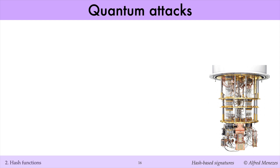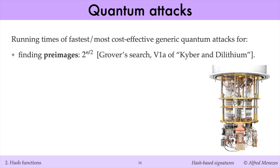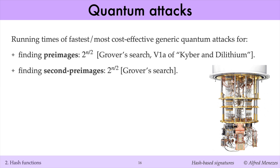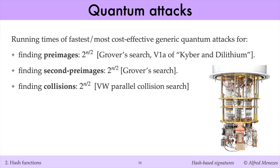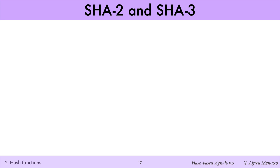The security landscape changes when considering quantum attacks. The most efficient generic quantum attacks for finding preimages takes 2^(n/2) operations, for finding second preimages also takes 2^(n/2) operations, and for finding collisions takes 2^(n/2) operations. Grover's Search is a quantum algorithm that provides a quadratic speed-up over the fastest generic classical algorithms for finding preimages and second preimages. The Van Orschert-Wiener Parallel Collision Search is an algorithm for classical computers.